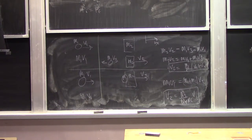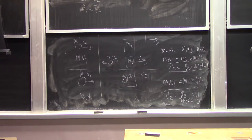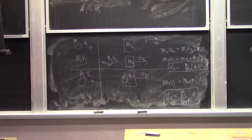So the green balls are better than the blue balls. The elastic collision gives a larger final velocity than the inelastic case.